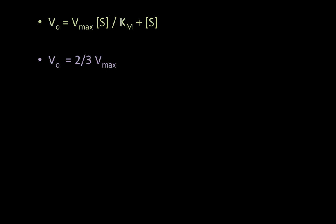So the initial velocity is equal to two-thirds Vmax. And you're going to plug that into the Michaelis-Menten equation above. So you're going to take the value two-thirds Vmax as V0 and plug it into the equation above. So you get 2/3 Vmax is equal to Vmax times substrate concentration all divided by KM plus substrate concentration.